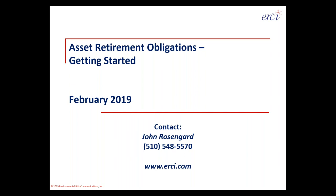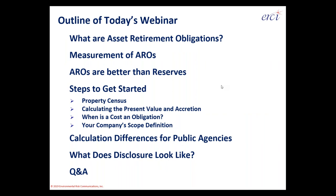The outline for our talk today will be a definition review of asset retirement obligations and how to measure them. I'll give a brief review about how asset retirement obligations and their associated reserving process is better than standard environmental reserves for discontinued operations liabilities. Then I'll cover how to get started in measuring, managing, recognizing, presenting, and disclosing environmental liabilities like AROs, and cover the calculation differences for public agencies, which have a brand new requirement to measure and disclose asset retirement obligations. Finally, I'll talk about what disclosure looks like in 2019.